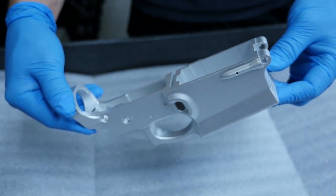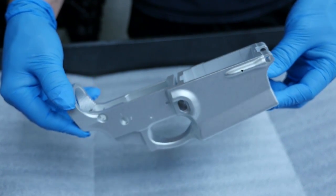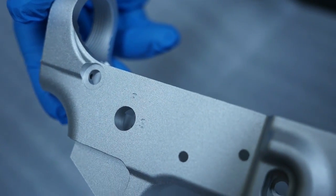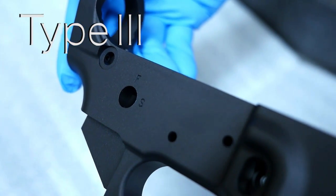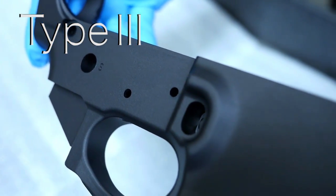The other kind of sulfuric anodize we offer is known as Type 3 or hard coat anodize. The colder bath temperature and higher amperage that the parts are processed through results in a thicker, more densely packed anodic pore structure.